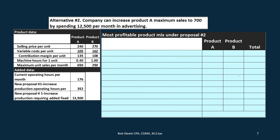Now for alternative two: the company can increase product A's maximum sales from 650 to 700 by spending $12,500 per month in advertising. The marketing department is requesting that budget, arguing that since product A has a higher contribution margin per unit and per machine hour, selling more of it generates more money. The question is whether the increase in contribution margin clears the $12,500 cost.